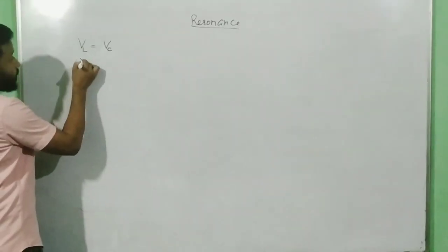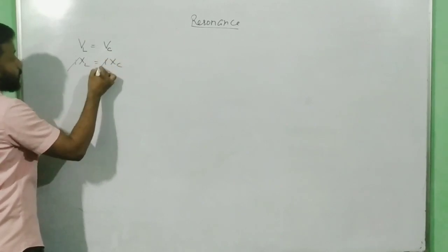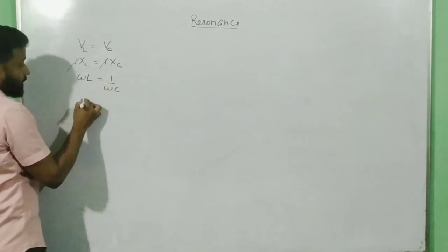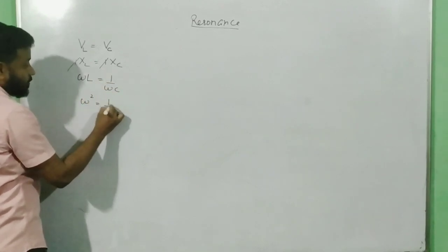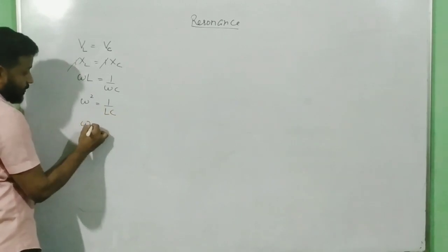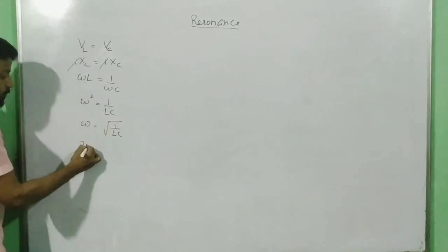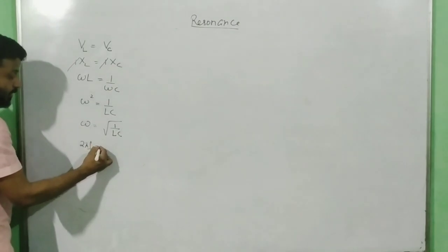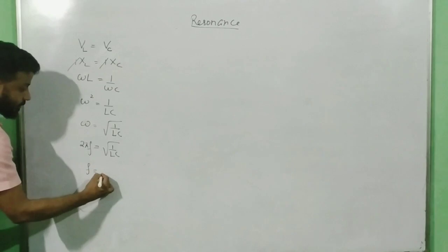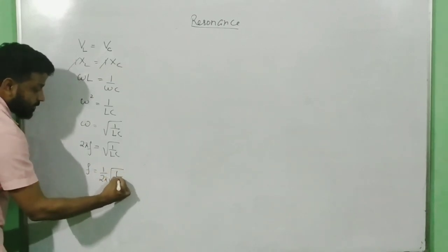This gives the value IXL equal to IXC, and cancelling I, you get omega L equals 1 by omega C, so omega squared equals 1 by LC, and omega equals root over of 1 by LC. Writing omega as 2πF, you get the resonance frequency F equals 1 by 2π root over of 1 by LC.